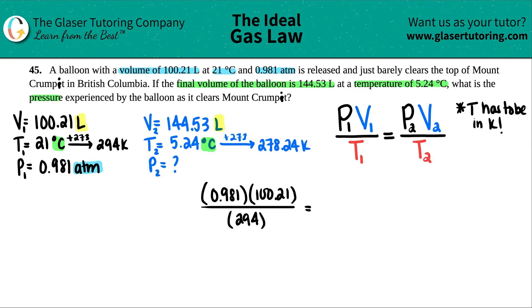And this equals P2, which is what we're solving for, times V2, which is 144.53. And that's all over now the new temp in Kelvin, 278.24. And now let's cross multiply it out. So this is going to be multiplied with this, and this part is going to be multiplied with this.